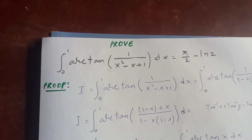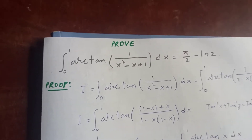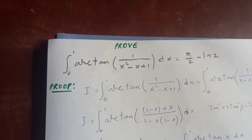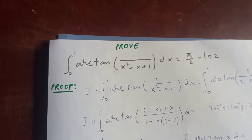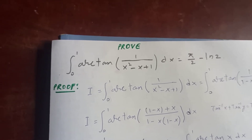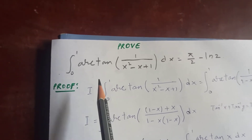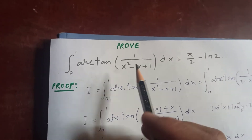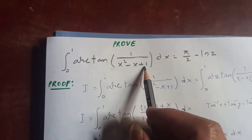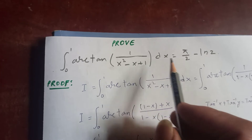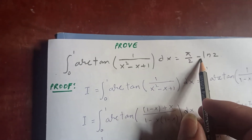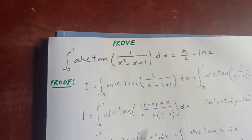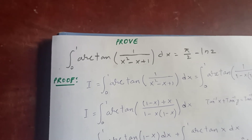Thanks for watching my video today. Let's prove an interesting integral: the integral from 0 to 1 of arctan — inverse tangent — of 1 over x squared minus x plus 1, dx, equals pi over 2 minus log 2. So how do we proceed with this one?